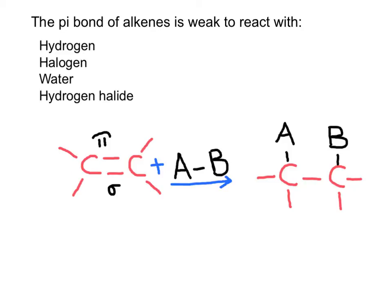A carbon-carbon double bond is made out of a single sigma bond and a pi bond. The pi bond is a very weak bond and easy to break. The family of alkenes will undergo addition reactions that occur between two reactants that add together to form a single product, with no leftover atoms. First, observe that the double bond is no longer present — we have single bonds only — and that the two atoms of the reagent are added across the double bond.